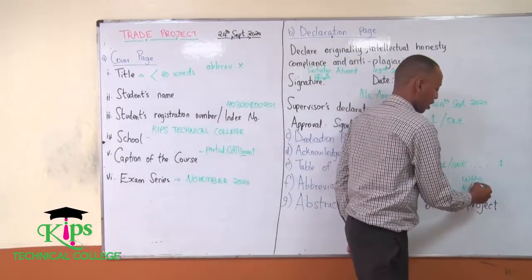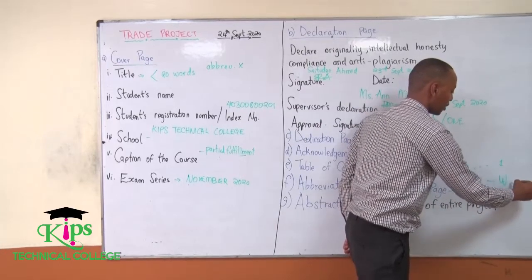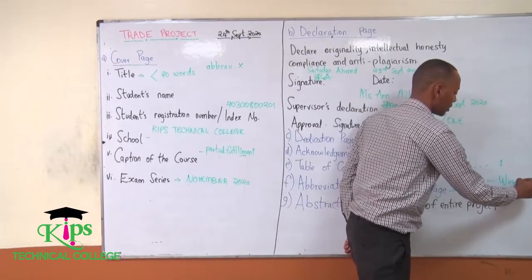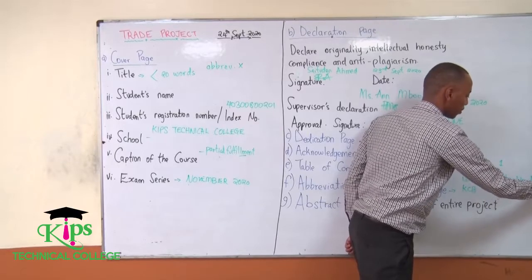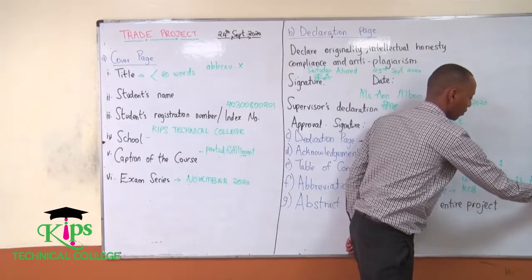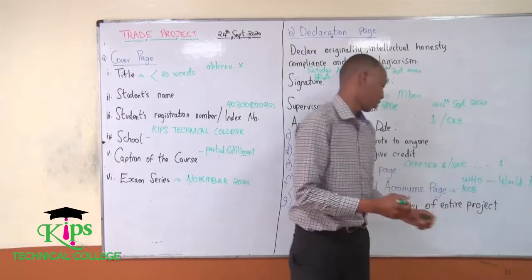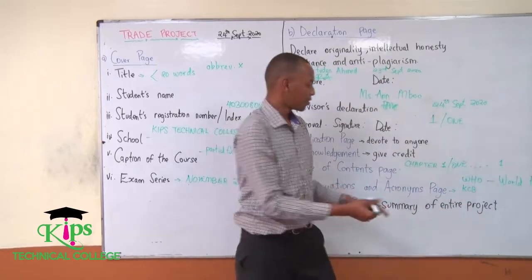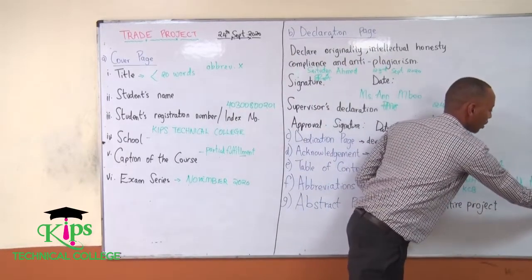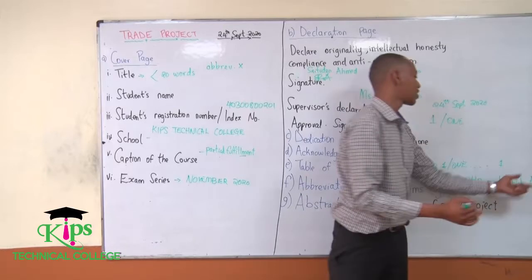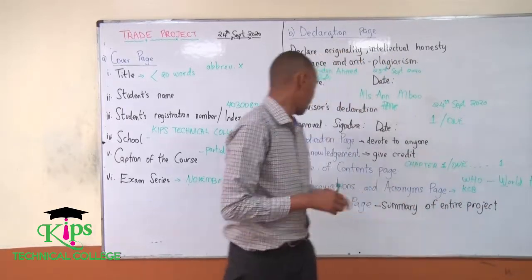When you write 'WHO', you come and say this stands for World Health Organization. These first letters must be in capitals, whatever the abbreviations mean.